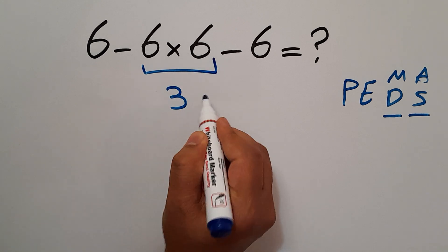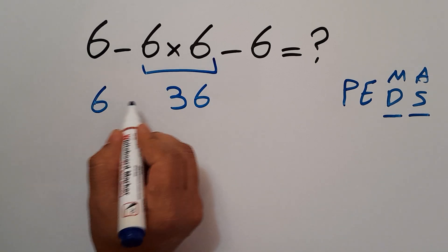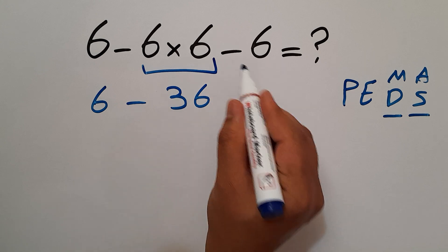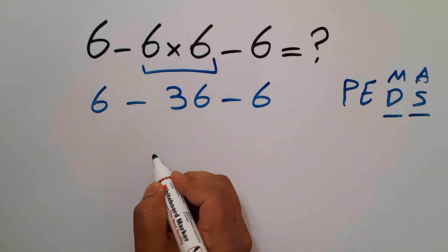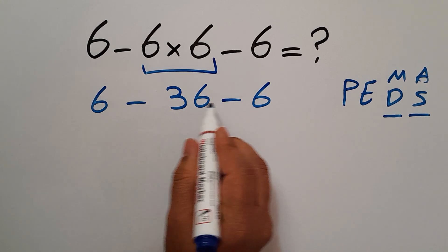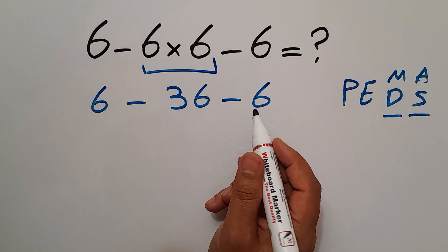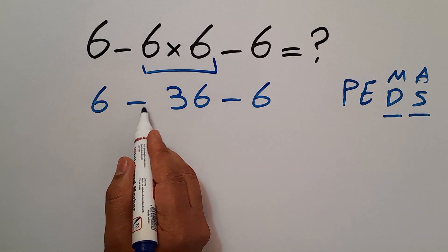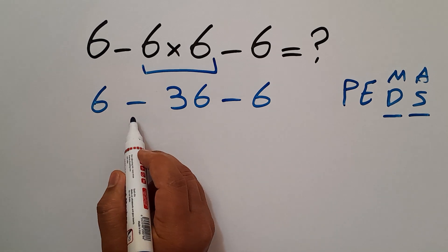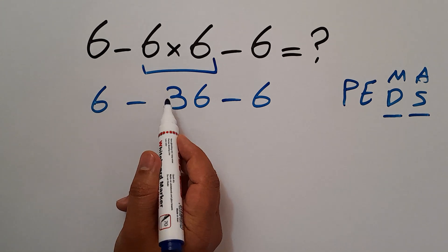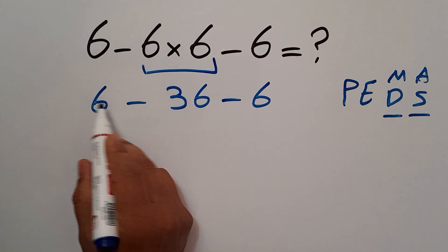So we have 6 minus 36 minus 6. Now we have two subtractions. As we know, when we have more than one subtraction in one expression, we have to work from left to right. So first, this subtraction: 6 minus 36 gives us negative 30.